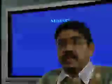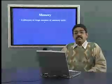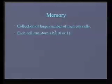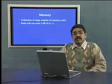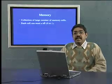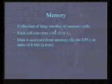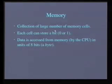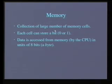Memory is essentially a collection of a large number of memory cells and each cell can store what is known as a bit. A bit is a binary digit, which means that its value is either 0 or 1. The reason for storing bits is that current electronic technology is transistor-based and transistors can be in two states — either on or off — which essentially represent the numbers 0 or 1. For efficiency, data is usually accessed from memory in terms of bytes. A byte is a group of 8 bits. Data may also be accessed in larger units, for example 2 bytes, 4 bytes, or on some computers even 8 bytes.